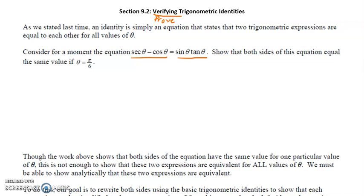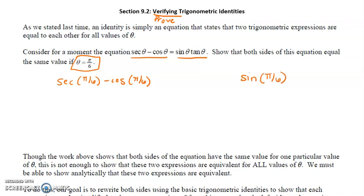Let's see if this trig statement is true at the value of pi over 6. If we were at that spot on the unit circle, would the expression on the left be the exact same as the expression on the right? Let's check that algebraically by plugging in pi over 6 for theta, working with each side individually — starting with the left side, then coming back to the right side.